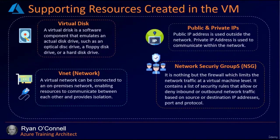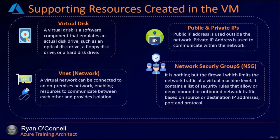When you create an Azure VM, supporting resources are automatically created. A virtual disk is created — a software component that emulates an actual disk drive such as an optical drive or hard drive. A VNet can be connected to an on-prem network, enabling resources to communicate and providing isolation. Public and private IPs are created: the public IP communicates with the outside world, while the private IP communicates within your own LAN. A network security group — essentially a firewall — limits network traffic at the VM level using rules that allow or deny inbound/outbound traffic based on source, destination, IP addresses, port, and protocols.